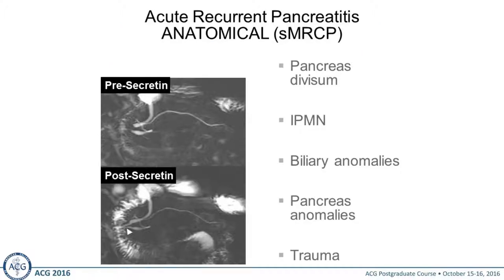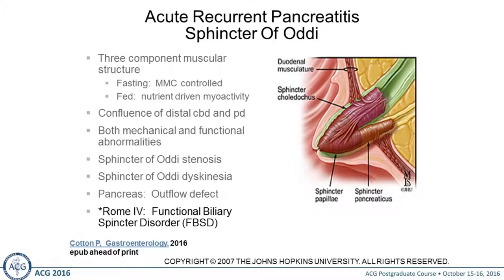Anatomically, what can MRCP show you? Secretin-enhanced MRCP is what most of us are using at academic centers when someone has been referred for recurrent pancreatitis. This has really replaced diagnostic ERCP — you just don't need diagnostic ERCP; you need ERCP for therapeutics. You can see pancreas divisum, IPMNs, biliary anomalies, pancreatic anomalies, and if someone has had trauma, you can see disruption in the pancreatic duct.